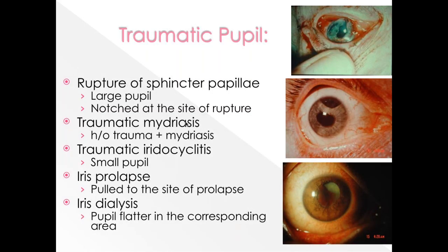In traumatic pupil following trauma, the pupil can be either large or small. There is usually damage to the sphincter pupillae, commonly producing a large pupil. Under slit lamp examination, multiple iris sphincter tears can be seen.